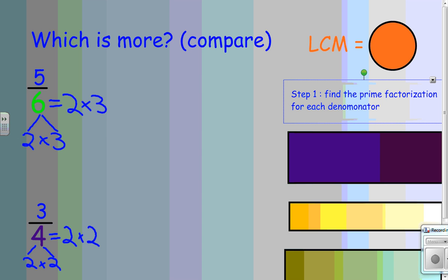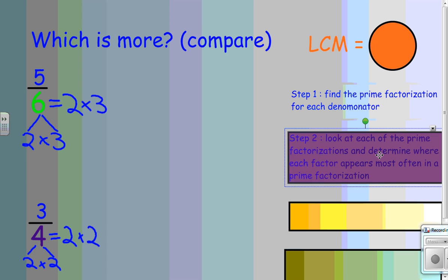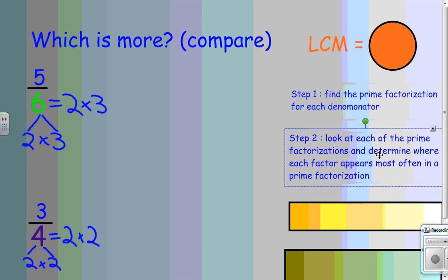Now, since I have their prime factorization broken down, I need to go to step number two. Step number two says look at each of the prime factorizations and determine where each factor appears most often in the prime factorization.